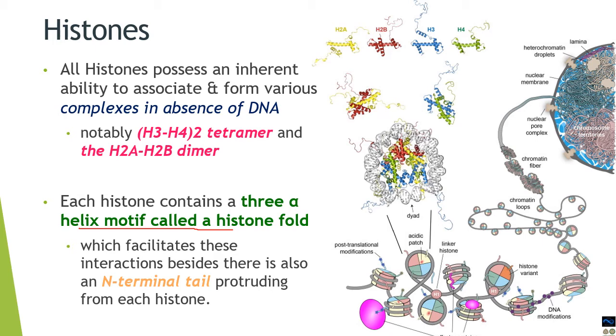Besides, there is an N-terminal tail in each of the histones which also serves as a point of interaction between them. As you can see in the diagram here, this is the N-terminal tail of each of the histones which helps in the interaction to form dimers or tetramers.